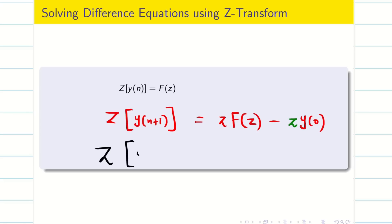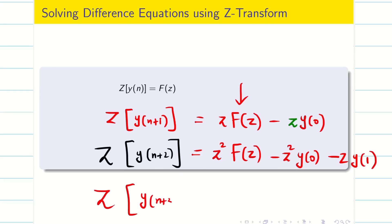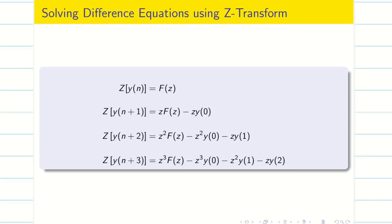Z of y(n+2) needs two initial conditions. Multiplying by Z, we get Z² F(Z) minus Z² y(0) minus Z·y(1). Similarly, Z of y(n+3) is obtained by multiplying the previous formula by Z again: Z³ F(Z) minus Z³ y(0) minus Z² y(1) minus Z·y(2). You can see the typed version.